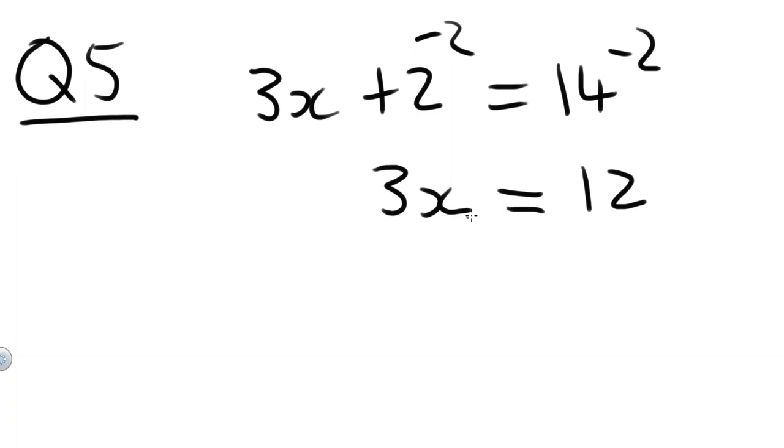Here we can just divide both sides by 3 to get rid of that 3. X will equal 12 divided by 3 equals 4. Let's check it. 3 times 4 equals 12. 12 plus 2 equals 14. Good.